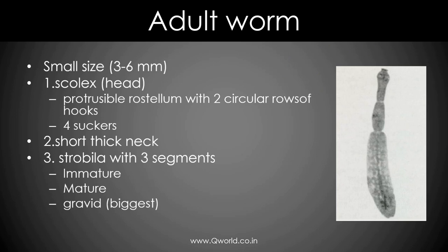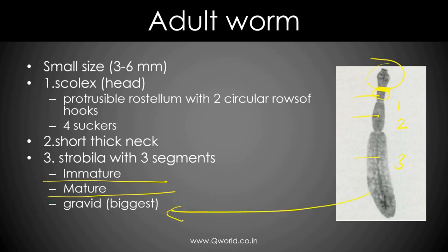The adult worm is actually the smallest cestode. It has a scolex or head with a similar structure to Taenia solium — a rostellum with hooklets and four suckers. It has a short neck and a very short strobila with only three segments: an immature segment, a mature segment, and a gravid segment. The gravid segment is the biggest.